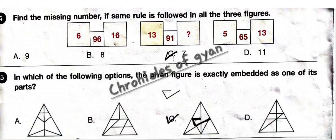Question 5: In which of the following options is the given figure exactly embedded as one of its parts? You have to find where this figure is embedded. It is embedded in option C.